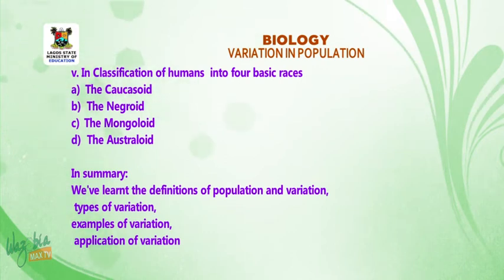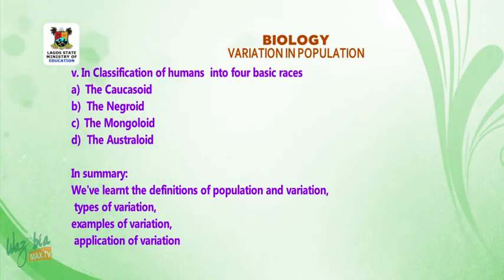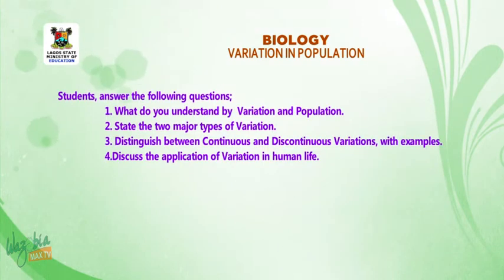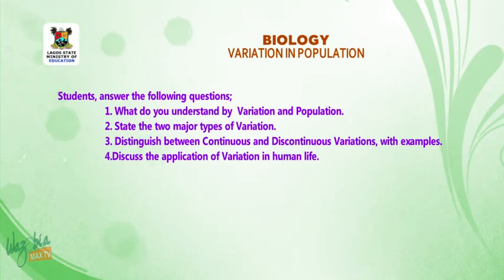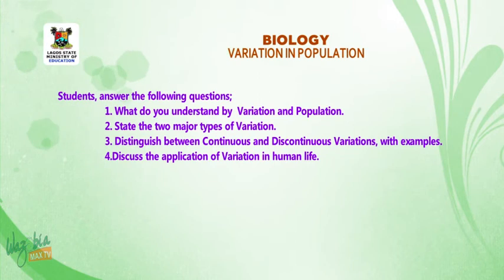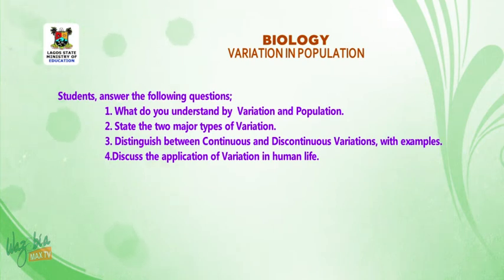In summary, we've learnt the definitions of population and variation, types of variation, examples of variation, and application of variation. Students, answer the following questions: 1. What do you understand by variation and population? 2. State the two major types of variation. 3. Distinguish between continuous and discontinuous variations with examples. 4. Discuss the application of variation in human life.